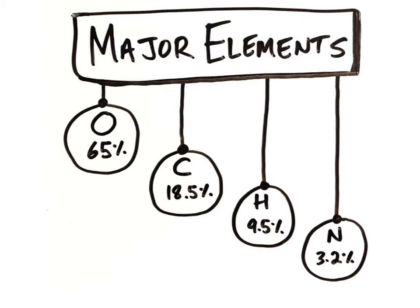Only four of these elements make up approximately 96% of the body's mass, and these are called the major elements. These four most abundant elements are oxygen, having the chemical symbol capital O, which makes up 65% of the body's mass. Carbon, having the symbol capital C, which makes up 18.5% of the body's mass. Hydrogen, having the chemical symbol capital H, which makes up 9.5% of the body's mass. And nitrogen, having the chemical symbol capital N, which makes up 3.2% of the body's mass.